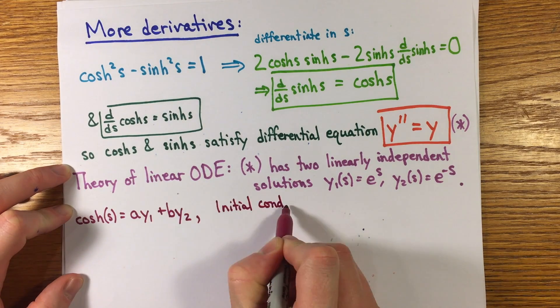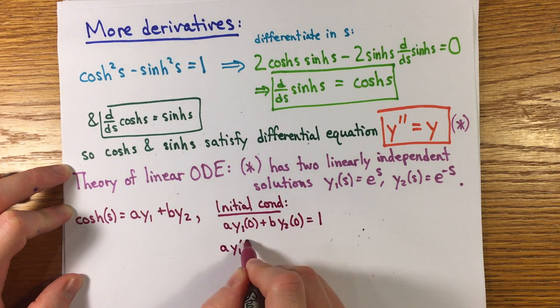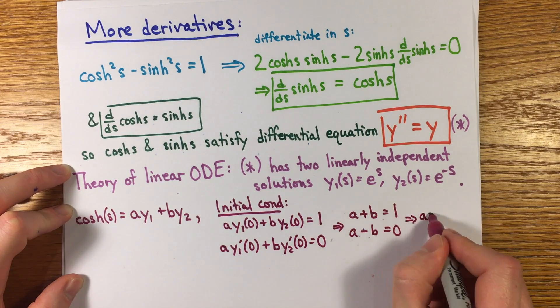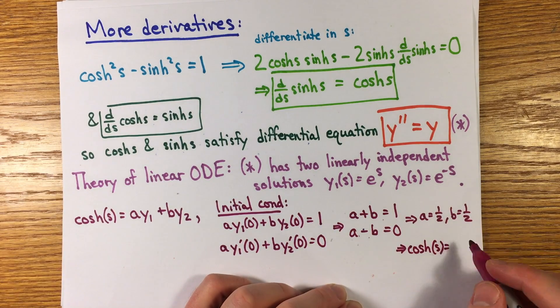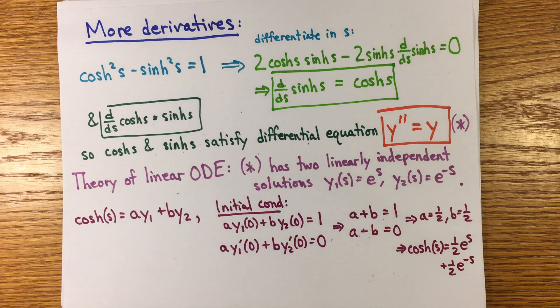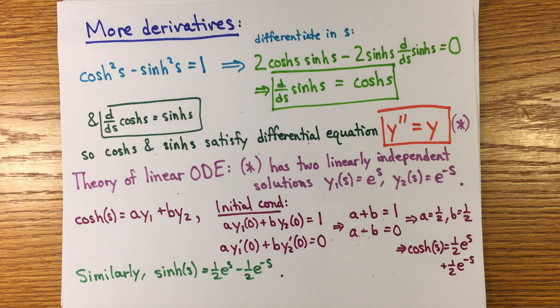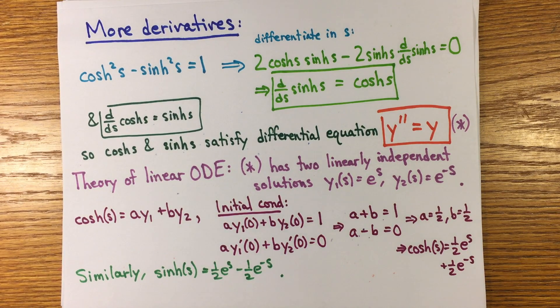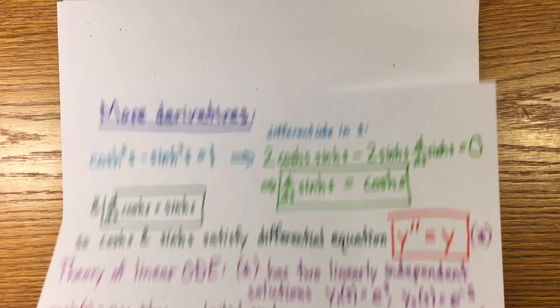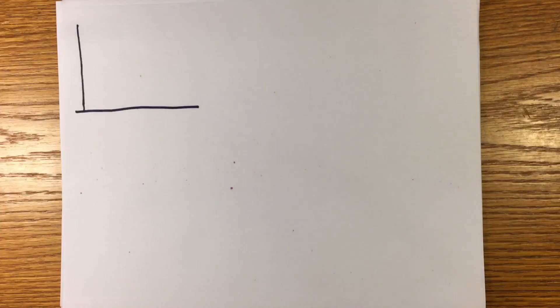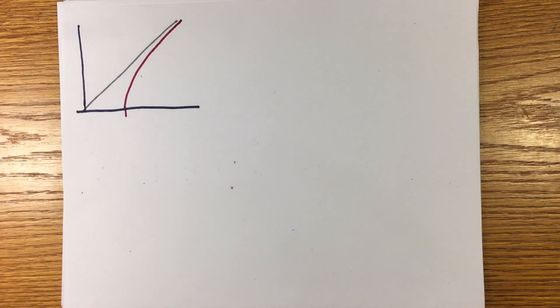From those expressions, you can derive the addition formulas for sinh and cosh, or you could use the differential equation for cosh s plus t and the initial conditions of that function. So that's how you can derive the expression of the hyperbolic trig functions as exponentials, starting from the parameterization of the hyperbola. But I haven't said yet what these functions are good for.